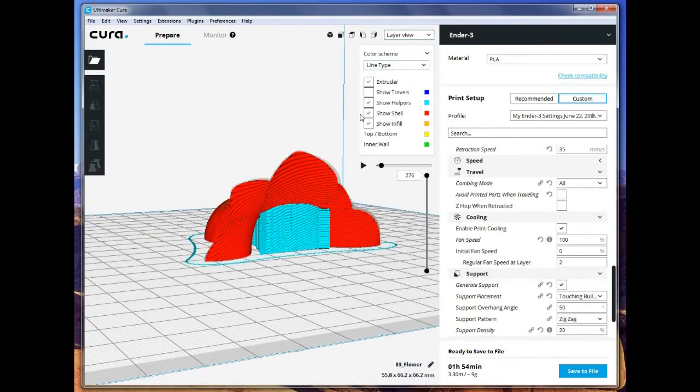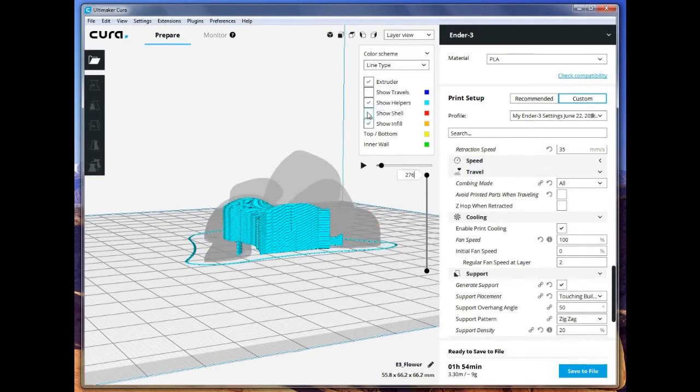Now we can remove the flower. And that's the support material, which will need to be removed when we're done.